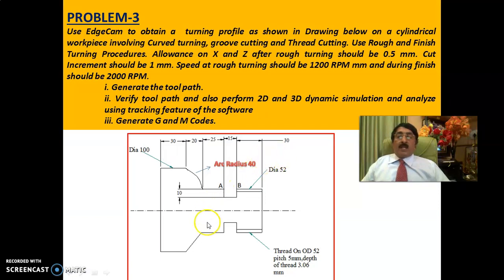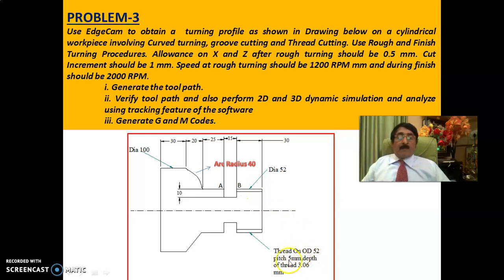The problem is similar to the previous one. Previously you had a taper turning; now there is a curve — an arc of radius 40. You also have a thread with diameter 52. The recommended pitch is 5mm and depth of thread is 3.06mm. You have to generate the toolpath, verify it, generate G&M codes, and get 2D and 3D dynamic simulation.